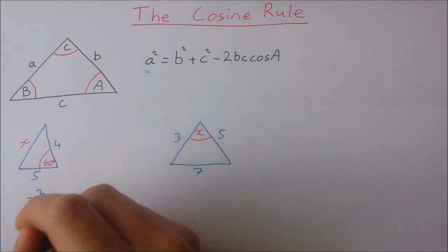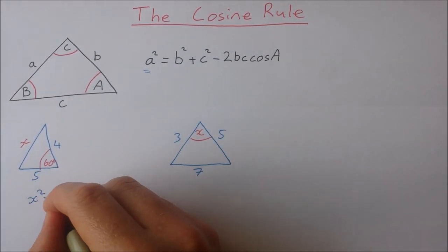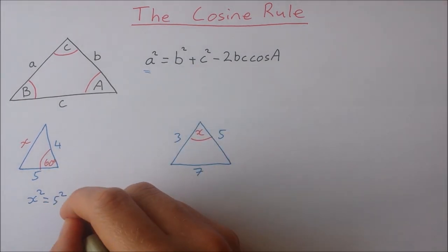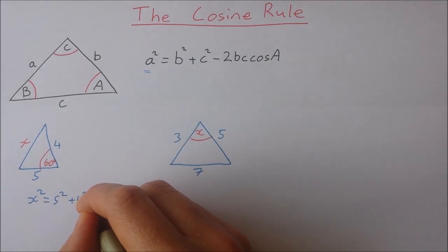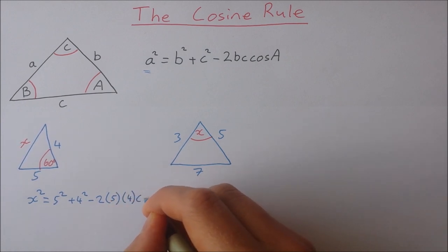So x squared is equal to b is 5, c is 4, b is 5 again, c is 4 and cosine of the angle which is 60.